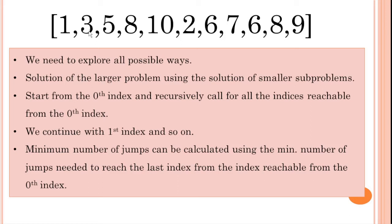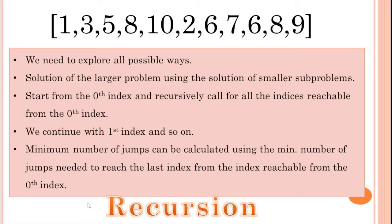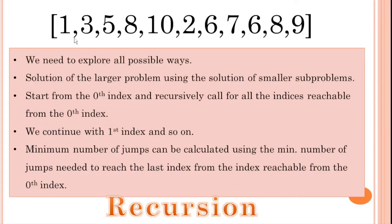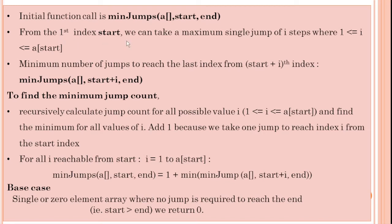We have to use the concept called recursion. In the recursion, the function name minimum_jumps will take three parameters: A is the array, this is the starting value, and this is the end value. Generally, the end will be the same for all the function calls — only the start will be different. From the start index, we can take a maximum single jump of i steps where i is greater than or equal to 1 and less than or equal to a[start]. That means if the value of a[start] is 5, i will vary from 1 to 5.